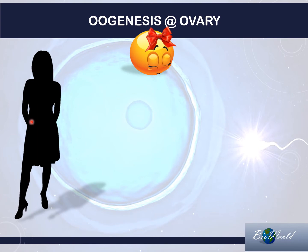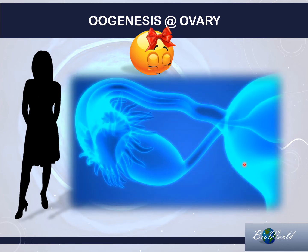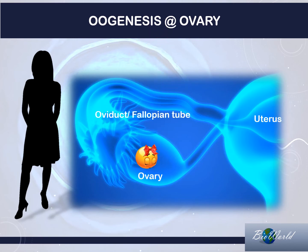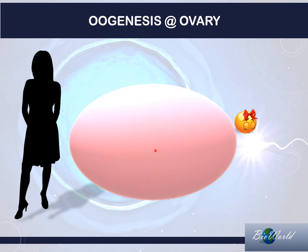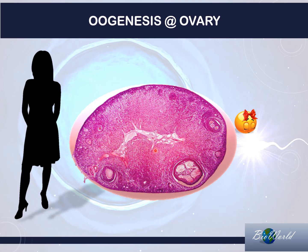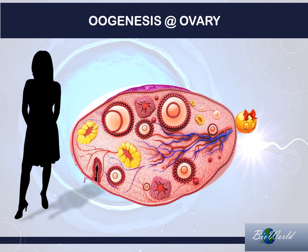Oogenesis occurs in the ovary of a female. Let's have a look at the reproductive system of the female. The ovum is synthesized in the ovary through oogenesis, and then it will travel along the oviduct, also known as the fallopian tube, into the uterus. Let's have a closer look at the ovary. If we view the cross-section of the ovary under a microscope, we can see there are many circular structures called follicles. To explain about these follicles, let me use a diagram of the ovary.